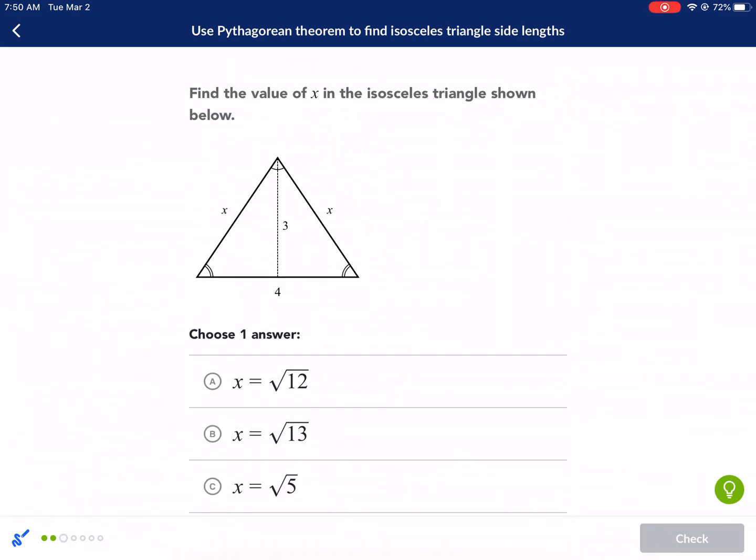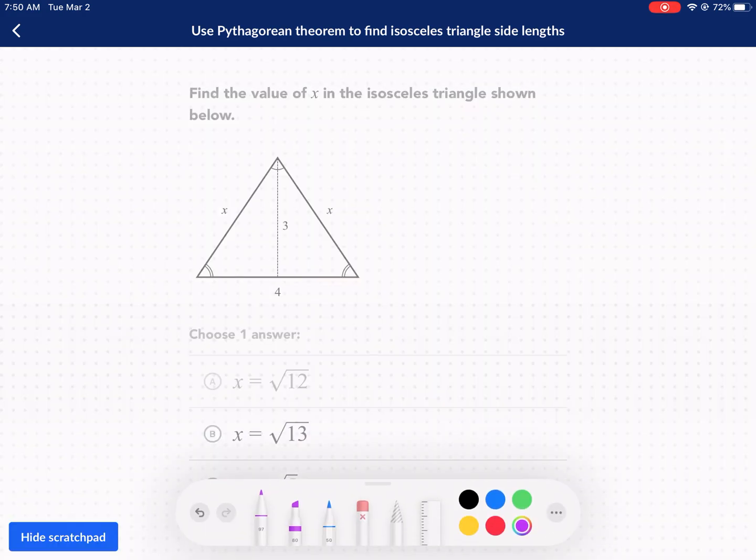Next question. Trying to find the hypotenuse this time. Recognize here that this is going to be 2 because the whole distance is 4. So we have 2 squared plus 3 squared equals, my friend, x squared. 4 plus 9 equals x squared. We have 13 equals x squared. You guessed it. x equals square root of 13.